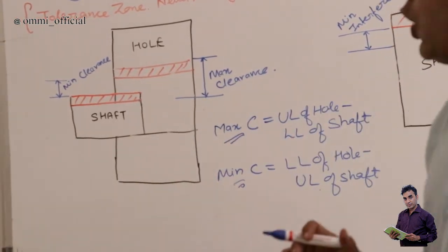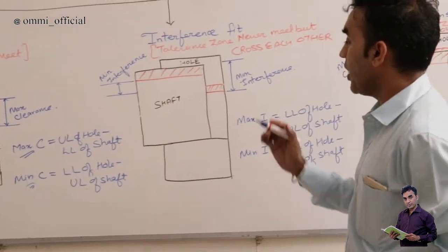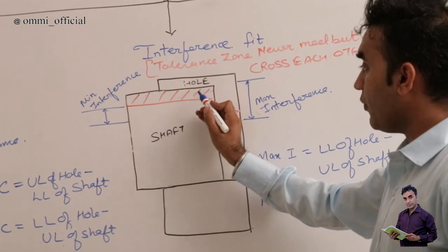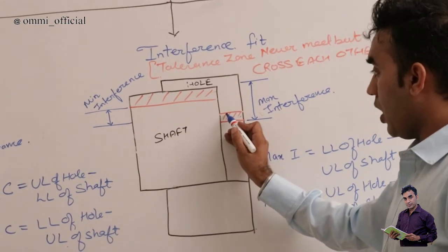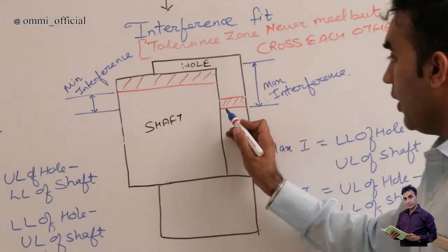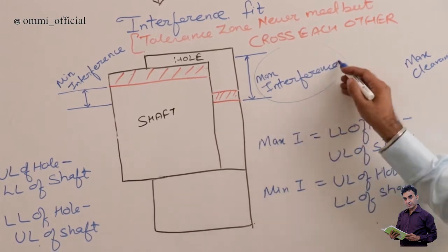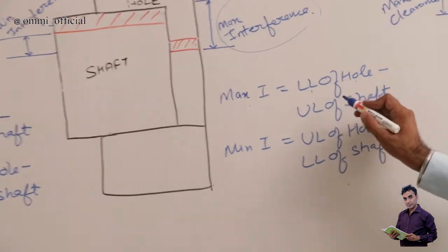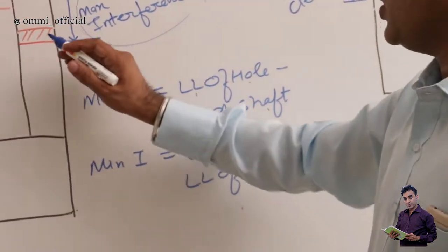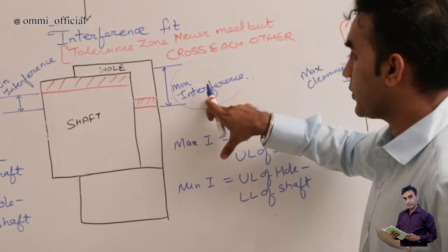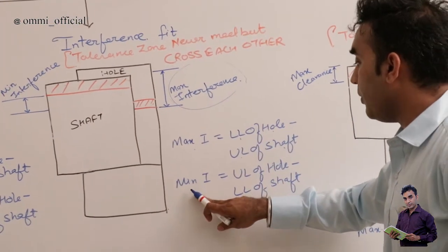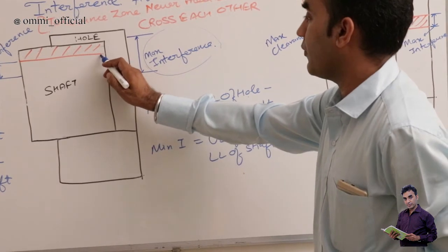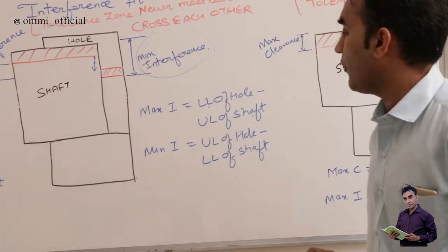For interference fit, we again have a hole and a shaft with their respective upper and lower limits. This time we have maximum interference and minimum interference. For maximum interference, it is the lower limit of the hole minus the upper limit of the shaft. For minimum interference, it is the upper limit of the hole minus the minimum limit of the shaft. This distance is known as minimum interference.